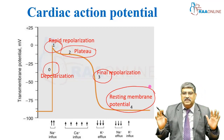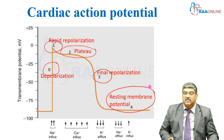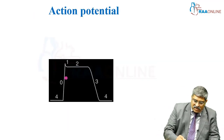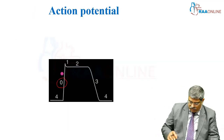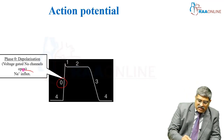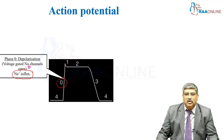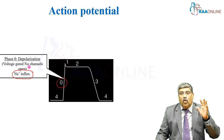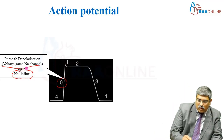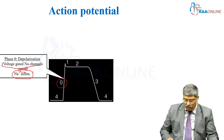What are the various changes which happen in each phase? Let us look at phase 0. There is sodium influx due to opening of voltage-gated sodium channels — that is phase 0.